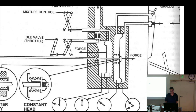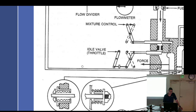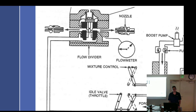The idle valve is in play from idle through about mid-range and a little beyond, because after this the only orifice we have is the discharge nozzles, which are fixed orifices. Just like the pressure carb, you need the idle spring. So fuel flows through here into the flow divider.